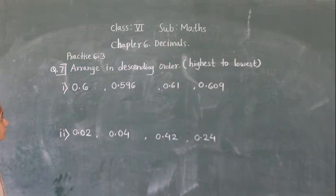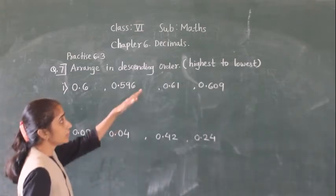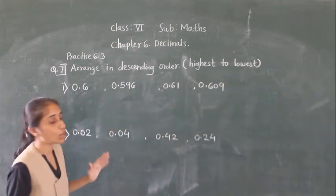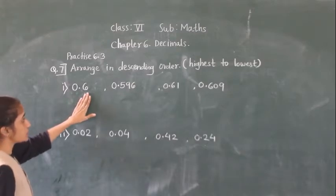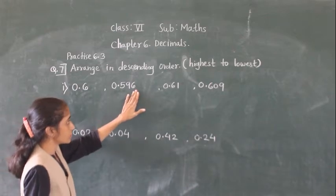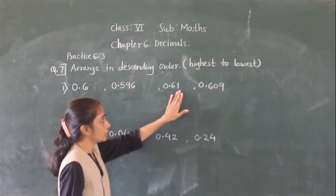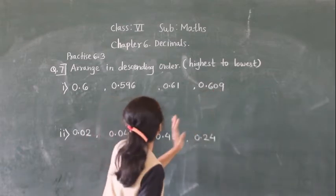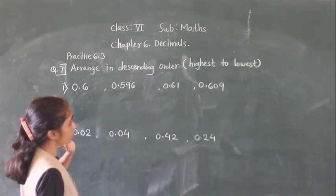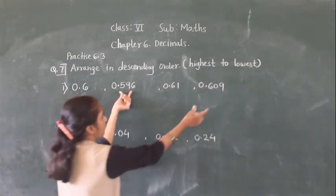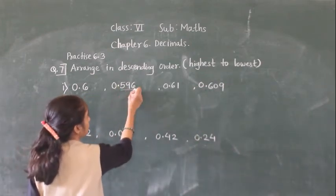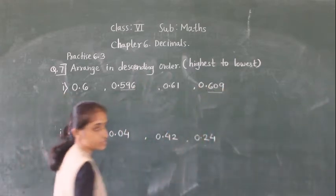Now question number 7: arrange in descending order. Descending order means highest to lowest, big to small. The numbers are 0.6, 0.596, 0.61, and 0.609. After the decimal point, 0.596 and 0.609 have 3 digits, 0.6 has 1 digit, and 0.61 has 2 digits.